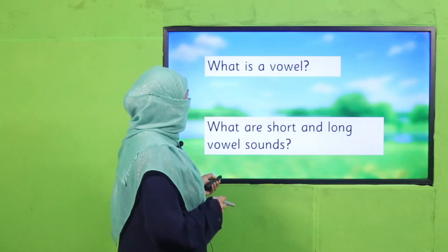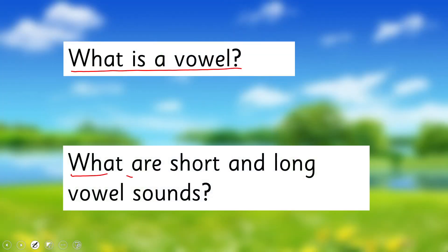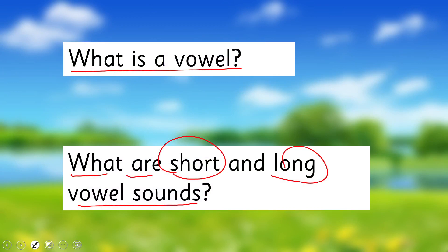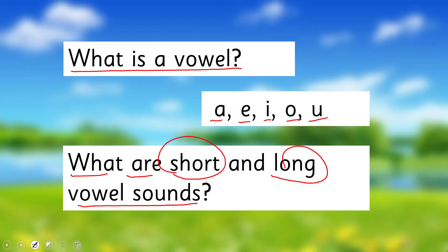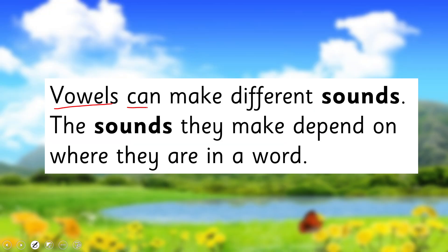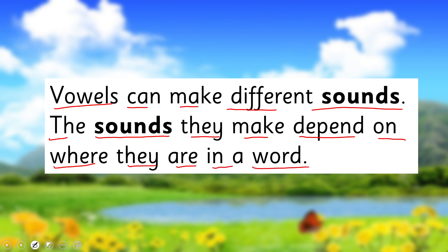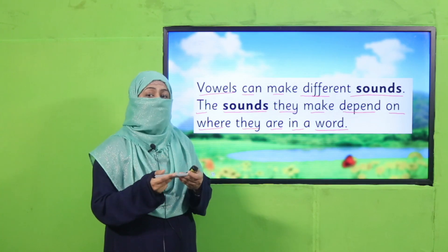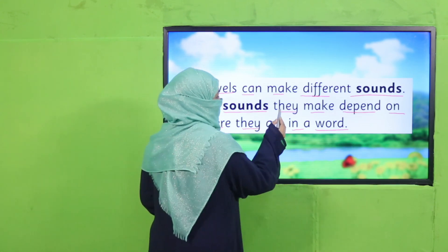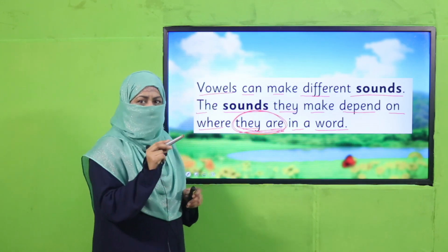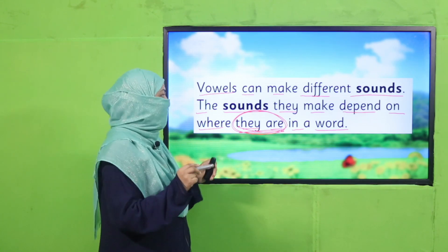So first, tell me: what is a vowel, and what are short and long vowel sounds? Do you remember? We have learned about it. Pause the video and answer these questions to your teacher. The vowels are five letters: A, E, I, O, U. The sounds associated with these letters are long and short vowel sounds. The sound a vowel makes depends on where it is in a word — the same letter can have different sounds. We find where the letter is in a word and then decide whether it's a short or long sound.